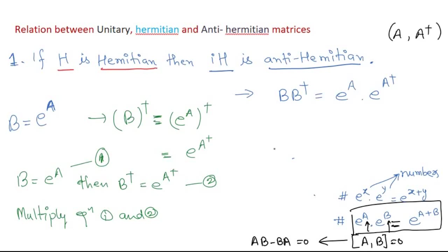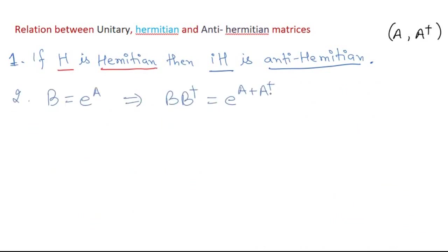So from here, B·B† = e^A · e^(A†) = e^(A + A†), since A and A† commute with each other. So far we have defined matrix B as the exponential of matrix A and derived this product formula.